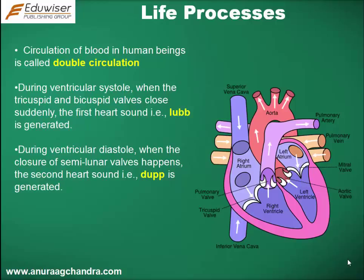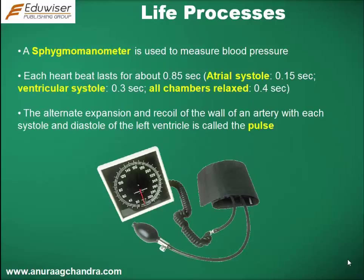During ventricular systole, when the tricuspid and bicuspid valves close suddenly, the first heart sound, i.e. lub, is generated. During ventricular diastole, when the closure of semilunar valves happens, the second heart sound, i.e. dub, is generated. A sphygmomanometer is used to measure blood pressure. Each heartbeat lasts for about 0.85 seconds. Arterial systole lasts for 0.15 seconds, ventricular systole lasts for 0.3 seconds, and all chambers relax for 0.4 seconds. The alternate expansion and recoil of the wall of an artery with each systole and diastole of the left ventricle is called the pulse.